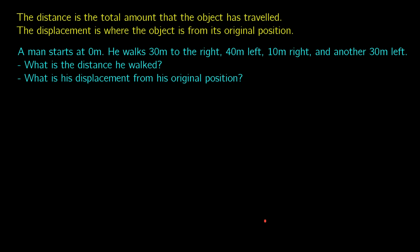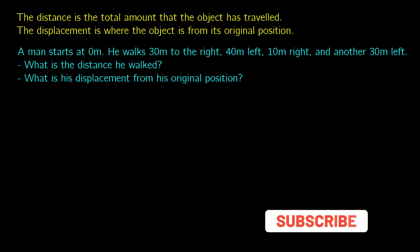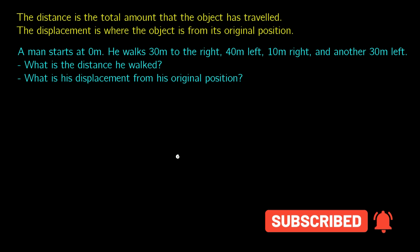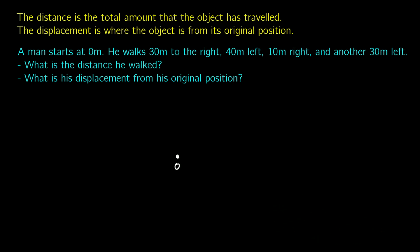Let's show this with an example. A man starts at 0 meters — I'm going to draw this as we go. He walks 30 meters to the right, ending up at 30. He walks 40 meters to the left, ending up at negative 10. He walks 10 meters to the right, ending up at 0. And then he walks another 30 meters left, ending up at negative 30.